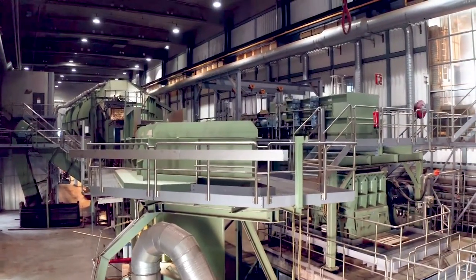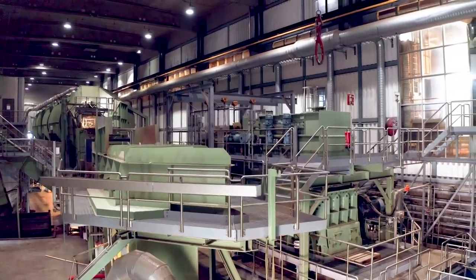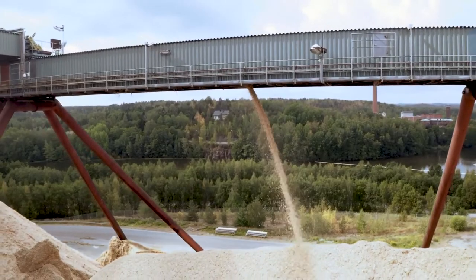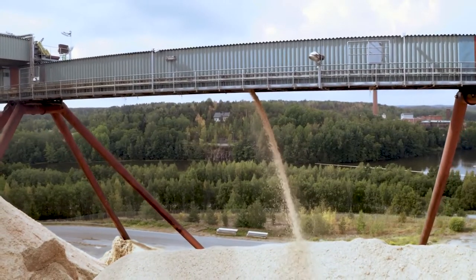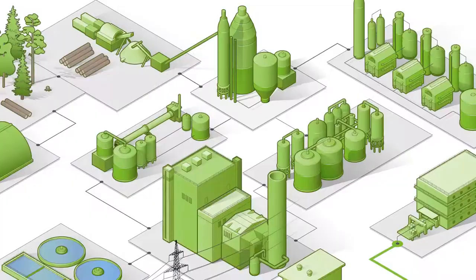The bark is used for renewable energy. Conveyor belts transport the chips to storage piles, after which they are transported to the digester.